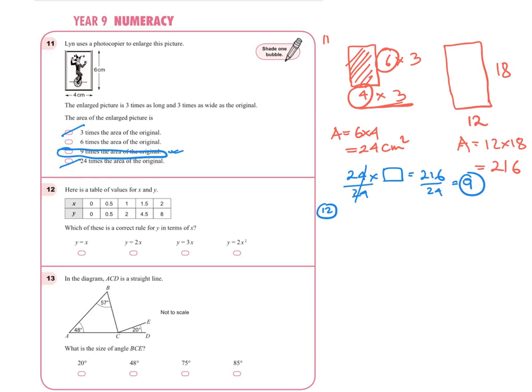Since two and eight are not the same, it's not y equals x. When x equals two, the pattern looks like two times two times two. So we can eliminate y equals x. Checking y equals 2x: two times 0.5 gives one — but we need 0.5, so that's not it either. Checking y equals 3x: three times two is six, not eight — so that's not it.